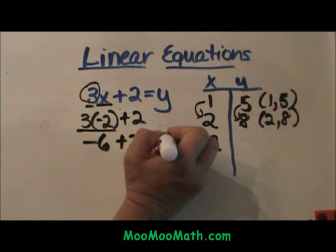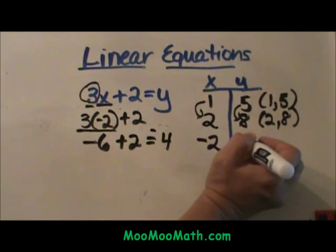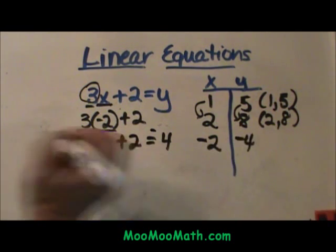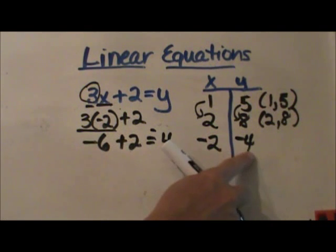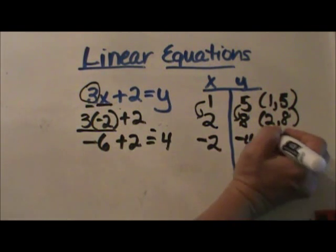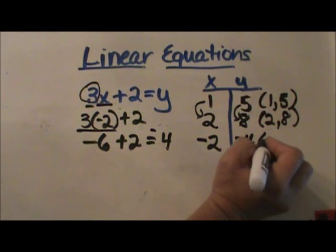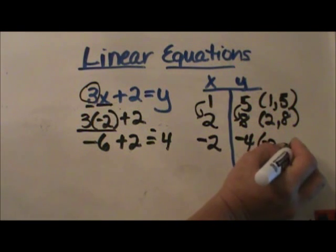Different signs subtract. Take the sign of the greater one which is negative 6. So the input is negative 2 and the output is negative 4. So that ordered pair would be negative 2 comma negative 4.